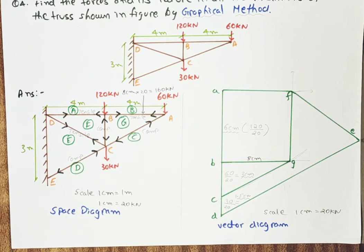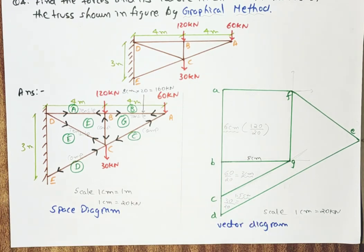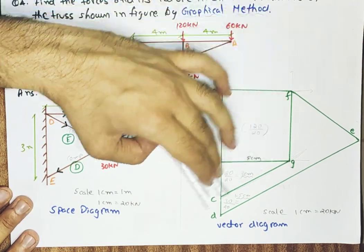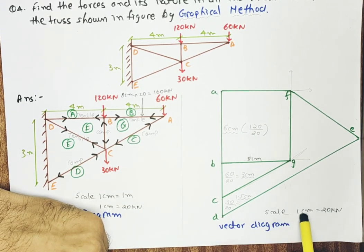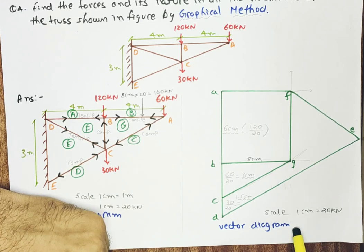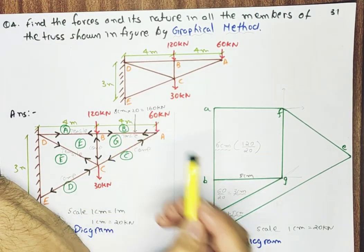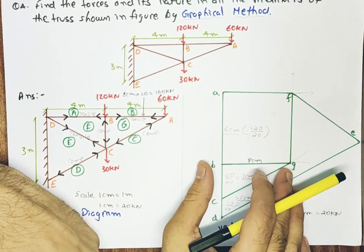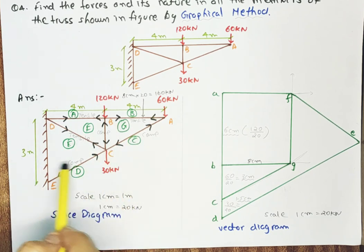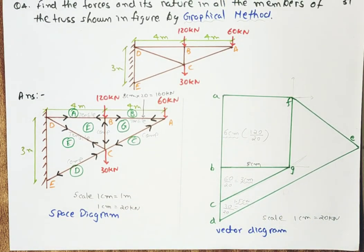The only thing remaining is magnitude. To determine the magnitude, we measure the length of each member in the vector diagram. For example, member B-G measures 8 centimeter. According to the scale, 1 centimeter equals 20 kilonewton, so 8 centimeter equals 8 into 20 equals 160 kilonewton. In this way we can determine the magnitude of forces in each and every member. The graphical method for the analysis of a simple truss is now complete.